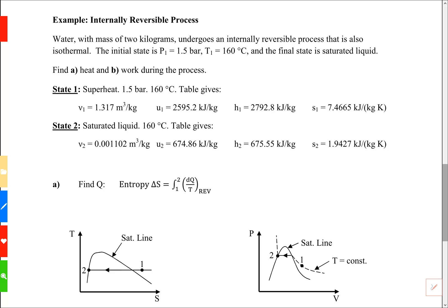In this example we have 2 kilograms of water and the internally reversible process is isothermal. The initial state is 1.5 bar and 160°C and the final state is saturated liquid. To save time I looked up the initial and final states and we're asked to find the heat and work during the process.